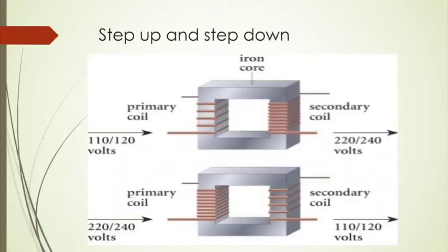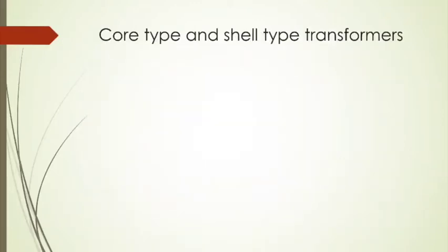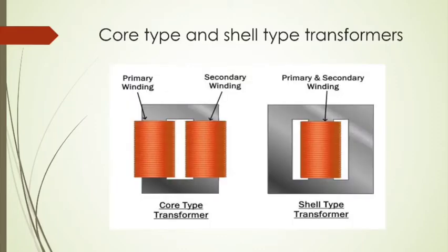Step-up transformers are used to increase the voltage and step-down transformers are used to decrease the voltage. There is another type of classification: core type and shell type transformers. In the core type, the iron core is largely surrounded by the coil, and in the shell type, both the primary and secondary coils are mounted on the laminated soft iron core as shown in the figure.